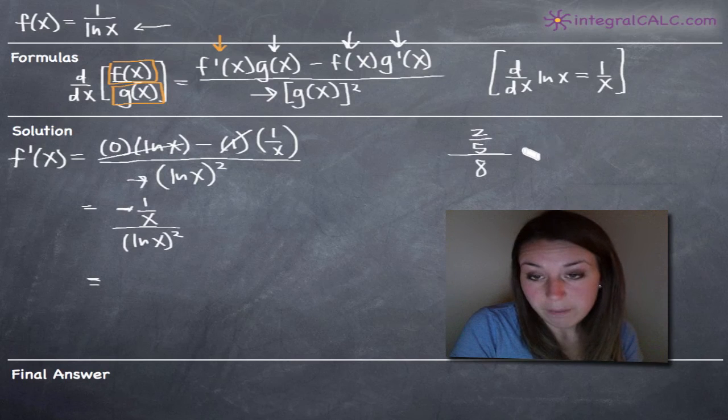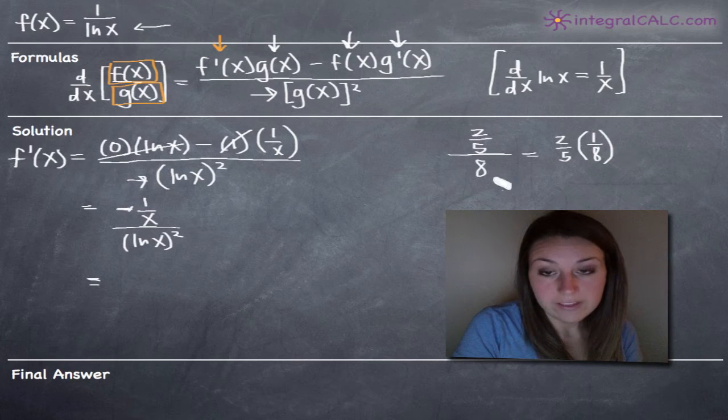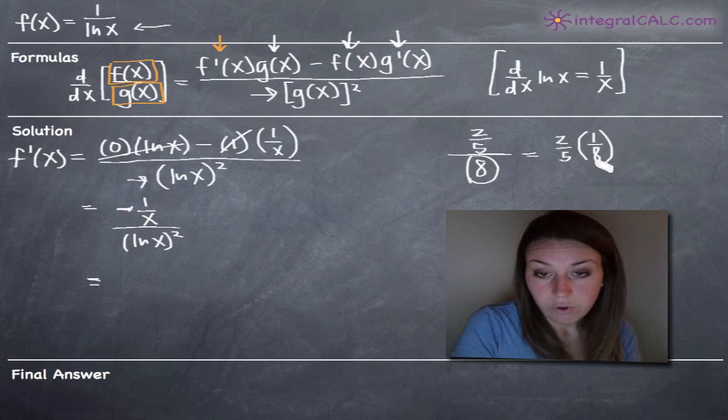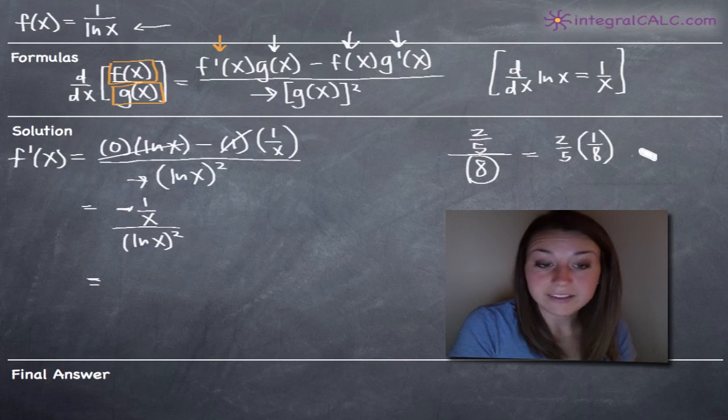Instead of 2 fifths divided by 8, you can convert this to 2 fifths times 1 over 8. So instead of dividing we're multiplying, and what allows us to do that is that we flip this 8 upside down and make it 1 over 8. So no matter what you've got in your denominator here, you can put 1 over your denominator and multiply instead of divide.